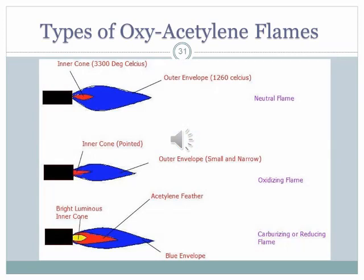Visually, the neutral flame has an inner core at 3300°C and a cooler outer envelope at 1260°C. The oxidizing flame has a pointed inner core and a small, narrow outer envelope. The reducing or carburizing flame has three distinct cones: a blue outer envelope, an acetylene feather, and a bright luminous inner cone.